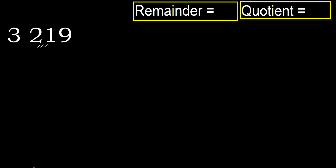219 divided by 3. 2 is less, therefore next. 21 is not less, therefore work with 21. 3 multiplied by which number is nearest to 21, but not greater?